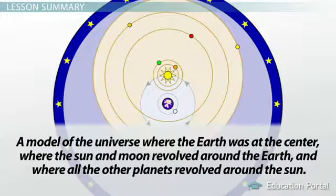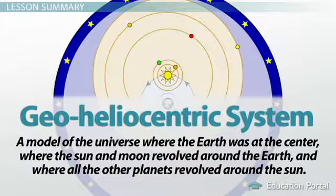So Tycho made a model of the universe where the Earth was at the center, where the Sun and Moon revolved around the Earth, and where all the other planets revolved around the Sun. Such a model is known as a type of geoheliocentric system.